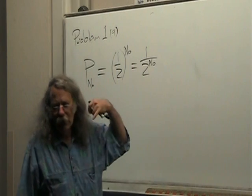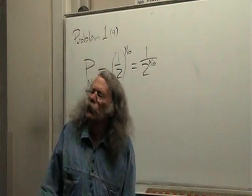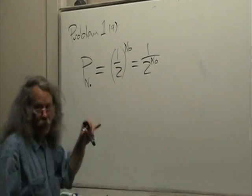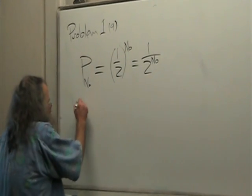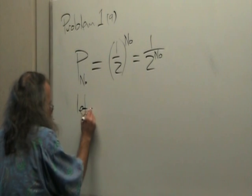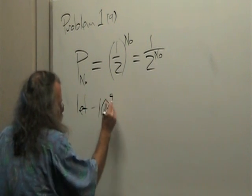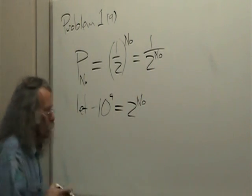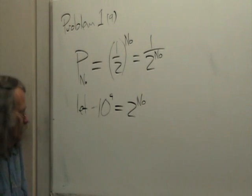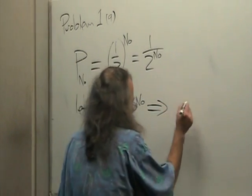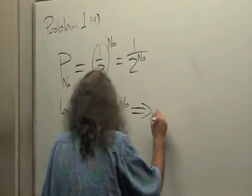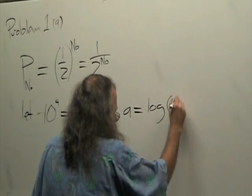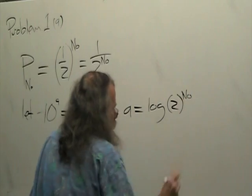But most people don't really have a good feel for base two. So we want to express it in base ten. And so the way we handle that is we let ten to the A equal two to the N naught. So we can convert this to base ten, and then the A is equal to the log of two to the N naught.